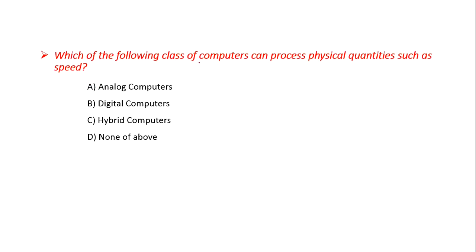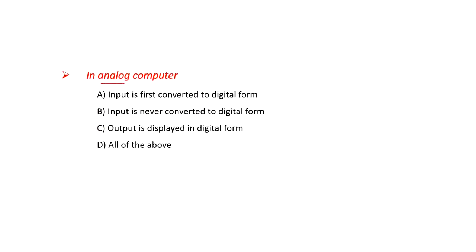Which of the following class of computers can process physical quantities such as speed? Option A: Analog Computer, B: Digital Computers, C: Hybrid Computers. The answer is Analog Computers. Analog Computers process physical quantities. Digital Computers process discrete values. Hybrid Computers can process both analog and digital quantities.